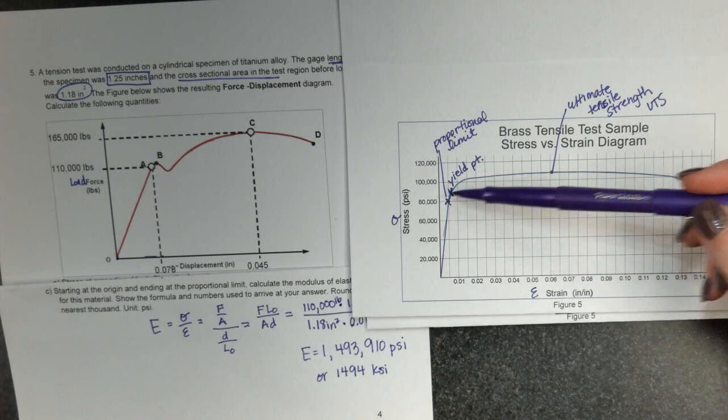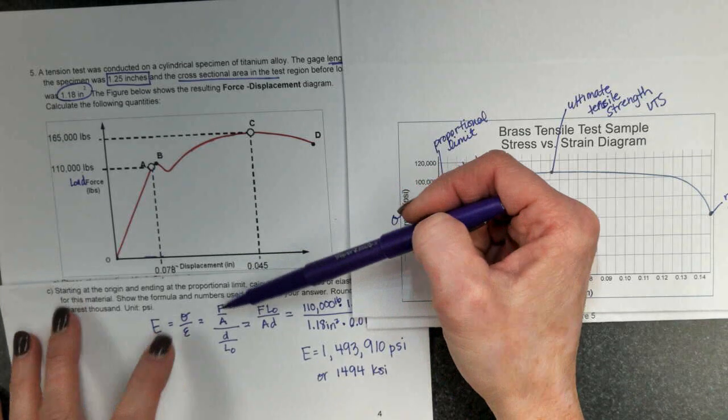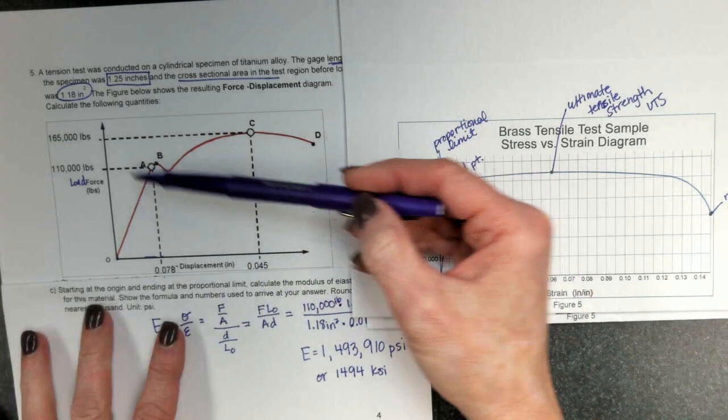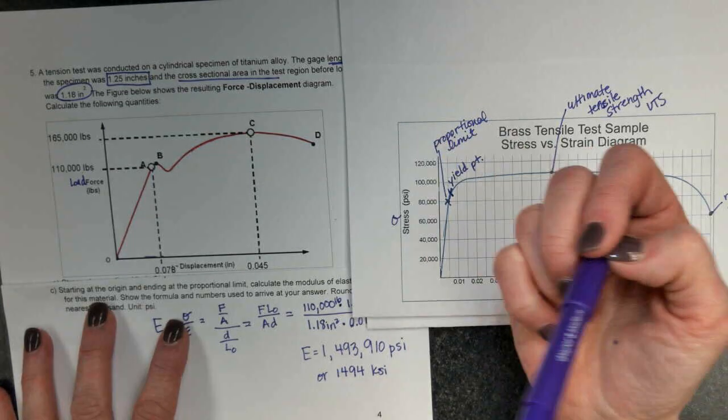Stress-strain graph, you can simply read from the graph, but the force displacement graph, you have to change it to stress and strain by dividing by your original area or your original length.